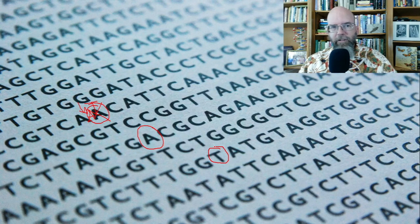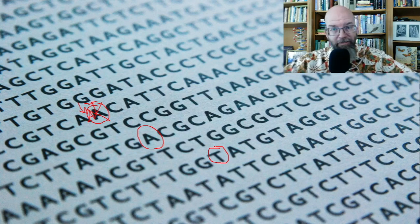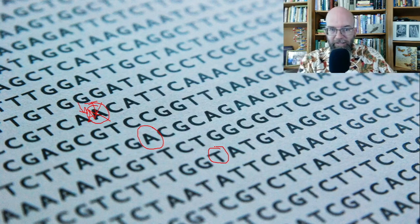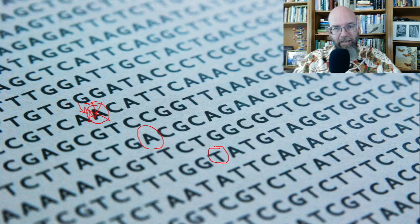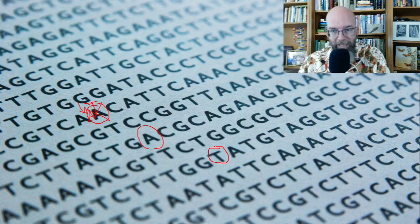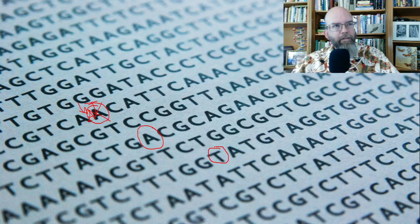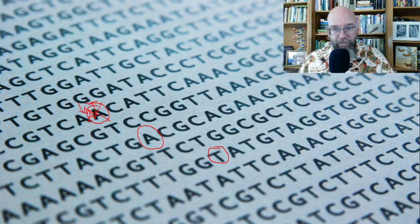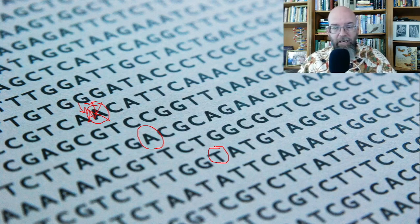For a long time the assumption has been that mutations are random with respect to our ability to predict where they may occur. This random nature forms the fundamental idea that every time cell divisions are occurring — or when any organism replicates and individuals make more individuals — they're going to have to make a copy of their code, there will be mistakes made, and the sequence of those changes will not be predictable. In short: mutations happen. They just happen.